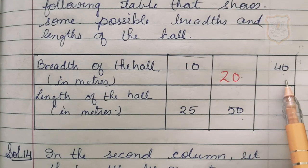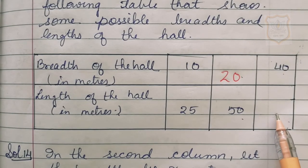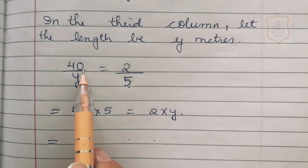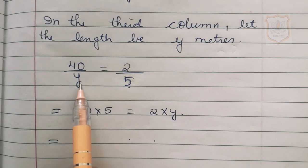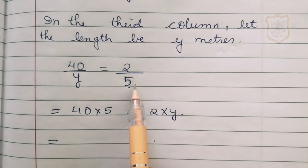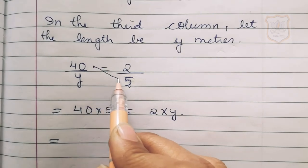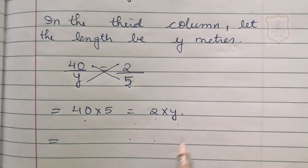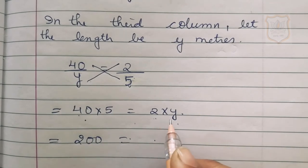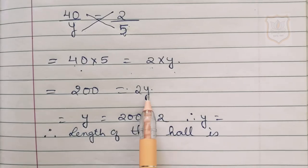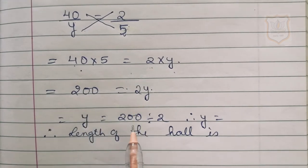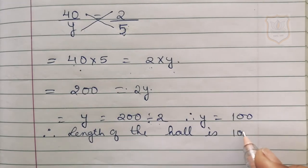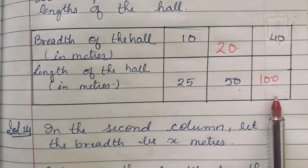In the third column, the breadth of the hall is 40 meters and we don't have the length, so let the length be y meters. So 40 upon y equals 2 upon 5. Using cross multiplication, 40 multiplied by 5 equals 2 multiplied by y, giving 200 equals 2y. So y equals 200 divided by 2, which is 100. Therefore, the length of the hall is 100 meters. We write 100 meters in the table.